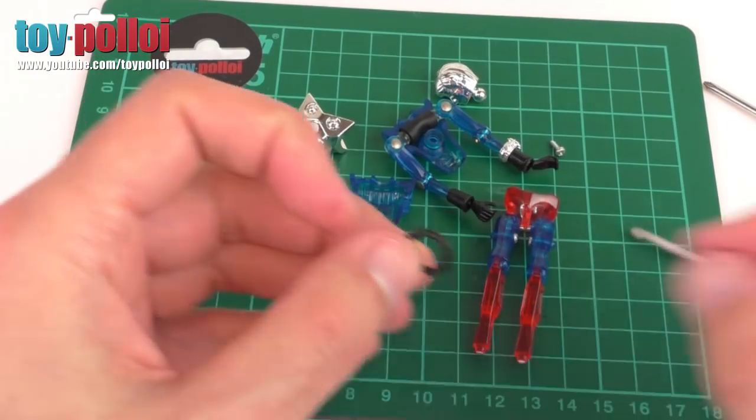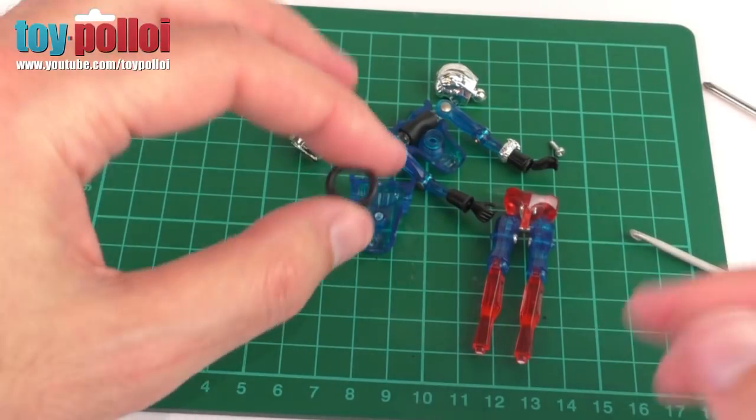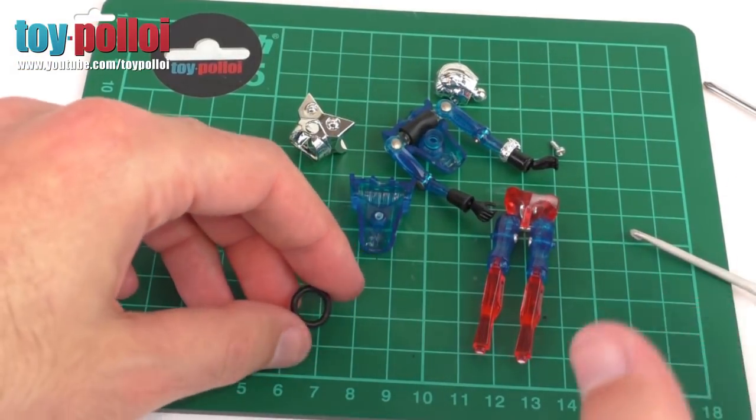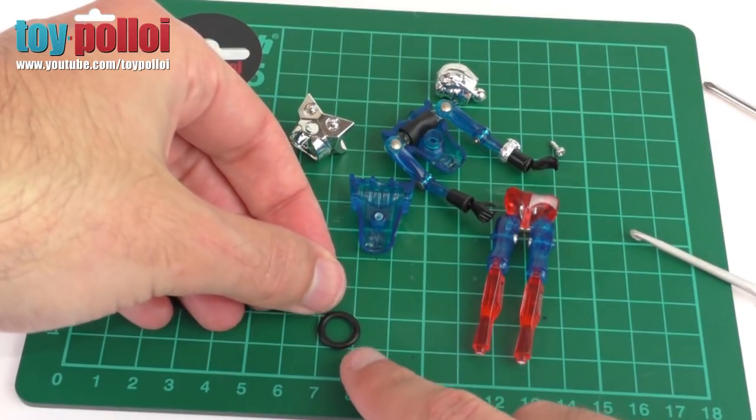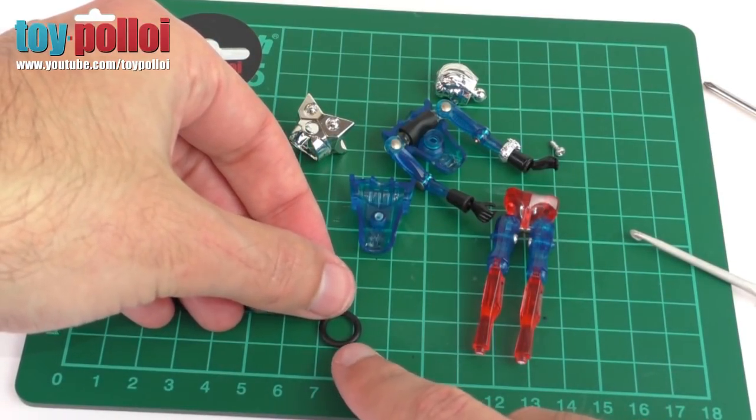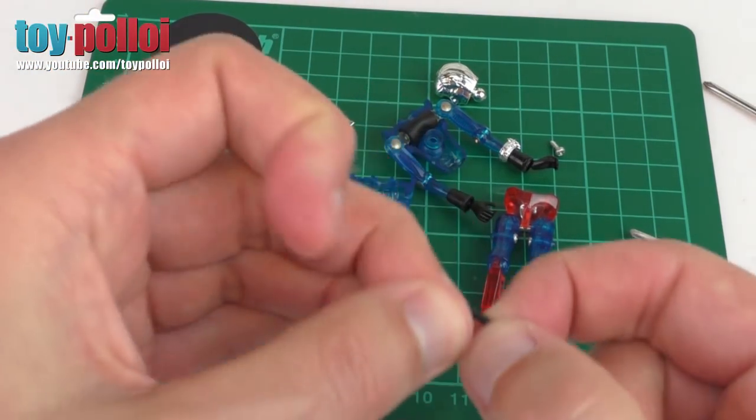If your o-ring has perished, which they sometimes do, you can replace them easy enough. You can buy o-rings from many places. I actually buy a big box of them and use them for multiple restorations. The o-ring size you're going to need is just slightly over one centimeter in diameter. I would say that's about 12 millimeters. That's the sort of o-ring size that you'll need.